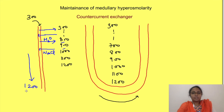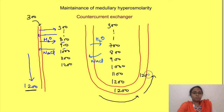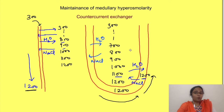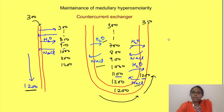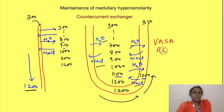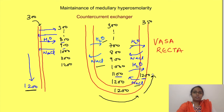Near the bend, blood becomes hyperosmolar as water moves out and ions come in. But as blood moves back up, it encounters opposite gradients — water moves into the capillaries and ions move out. Thus the osmolarity of both the medullary interstitium and the blood in the capillaries is maintained. This opposite-direction exchange of water and solutes in the descending and ascending limbs of the blood vessels means the vasa recta acts as a counter-current exchanger, maintaining the medullary interstitium gradient.